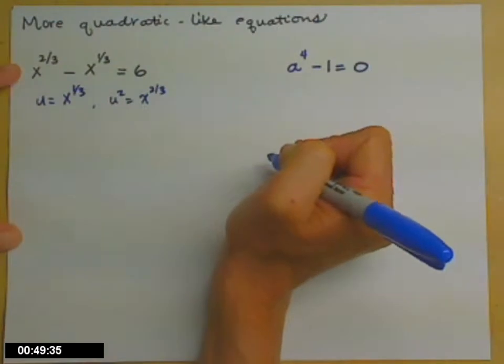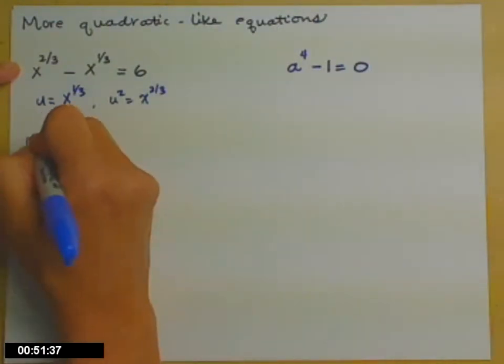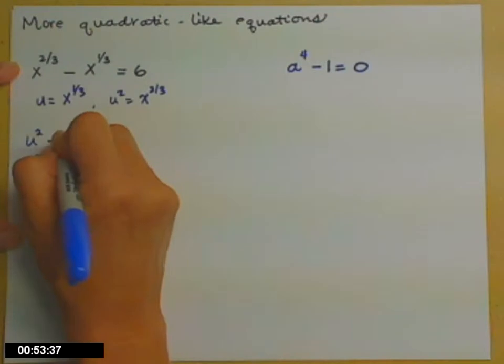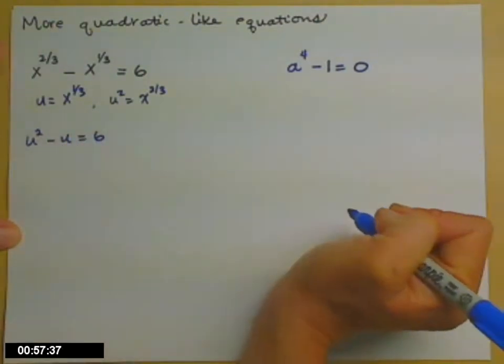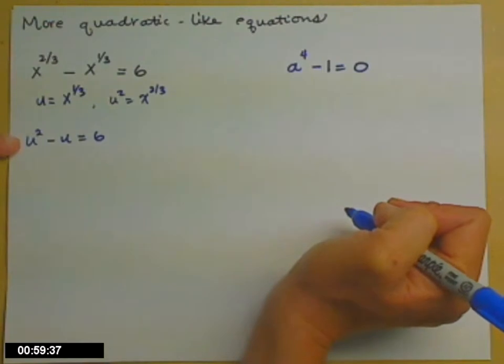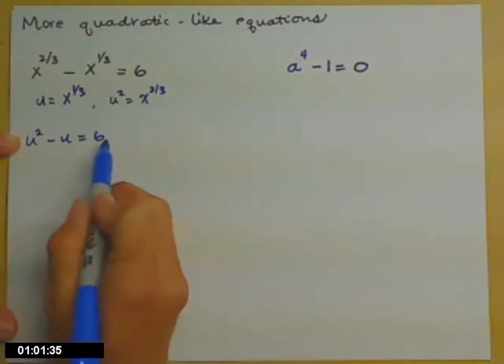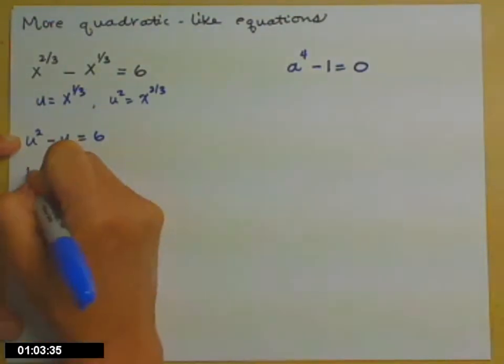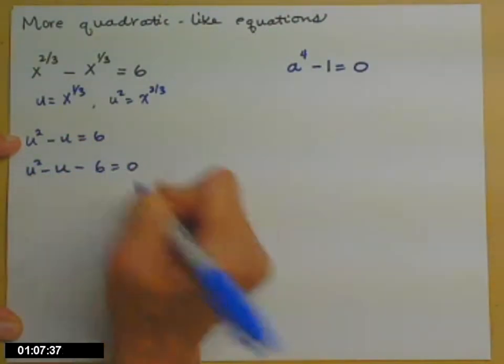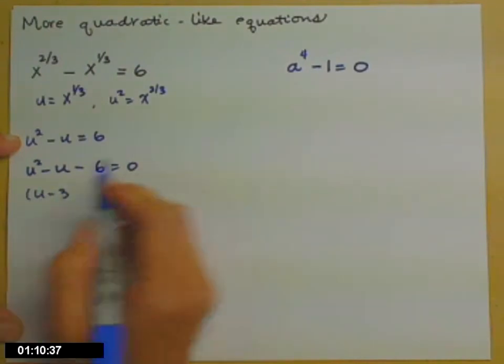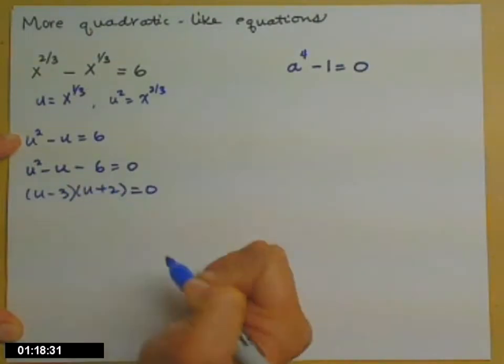So when I rewrite my equation in u's, I'll get u squared minus u equals six. So we've gone from being quadratic-like to being quadratic. Quadratics we solve by getting a zero on one side, so go ahead and subtract six from both sides. And factor: u squared minus u minus six equals zero factors into u minus three times u plus two equals zero.